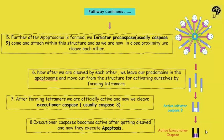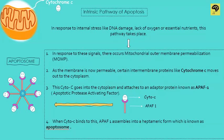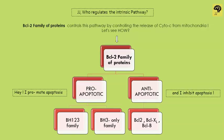Active caspase 9 then cleaves and activates executioner caspases — the rest is the same for both extrinsic and intrinsic pathways. Executioner caspases cleave all the structural proteins, causing apoptosis. Now we know the basics of the intrinsic pathway, but one question remains: what is the 'something' that attaches to the mitochondrial membrane and leads to MOMP, that is, permeabilization of the mitochondria?